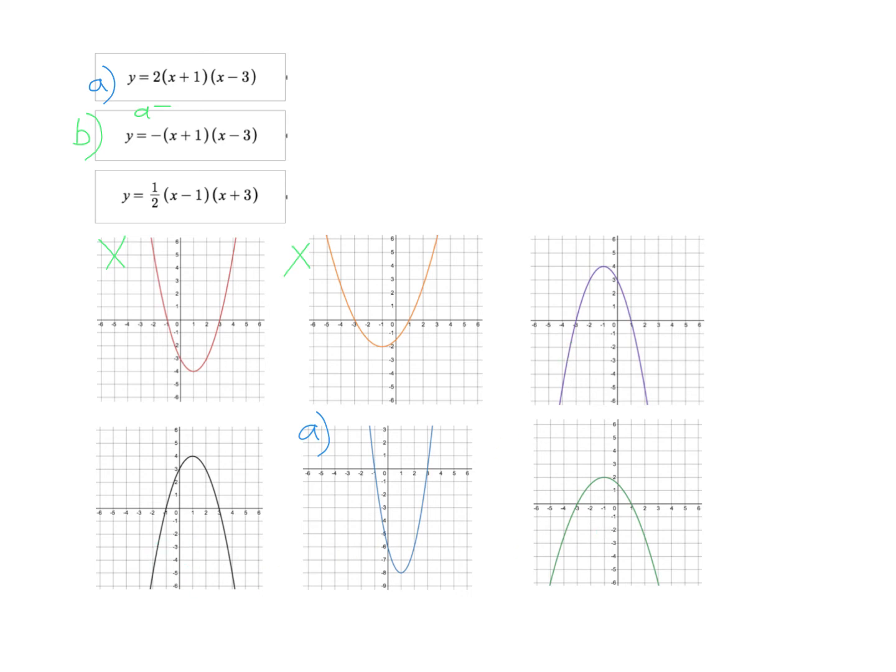Let's find the y-intercepts next. Or excuse me, the x-intercepts. And we find those x-intercepts by setting each factor equal to zero. So x plus one equals zero. You'll subtract one and get x equal negative one. x minus three equals zero. Add three. And we get x equal three. So the intercepts have to be at negative one and positive three.